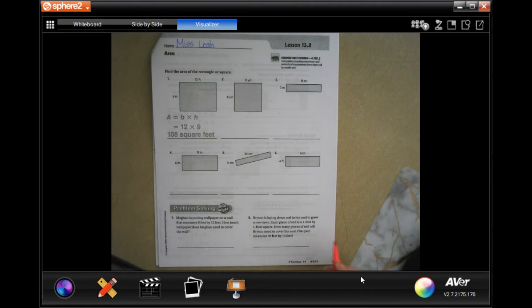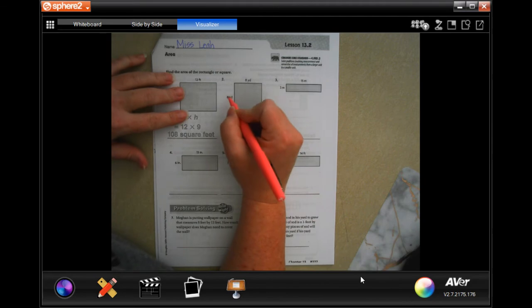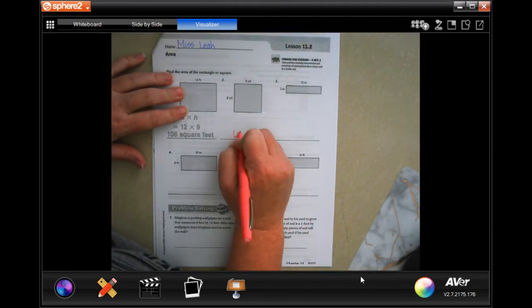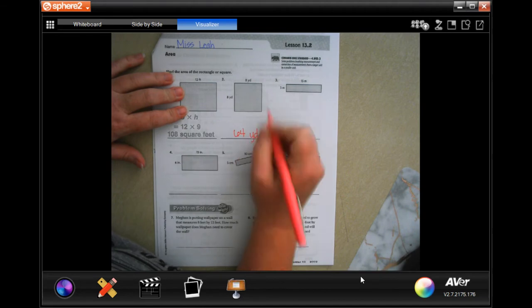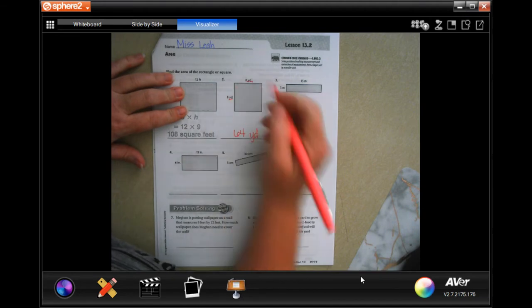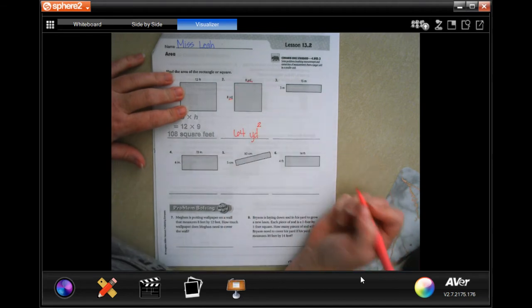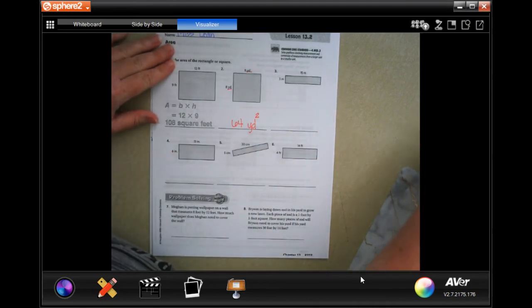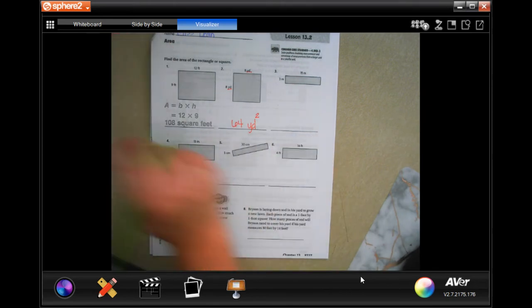So the big thing with area is area is length times height or base times height times width, whichever works, however you want to call it. When it's a square, it's easy because it's the same number. So eight times eight, 64 yards. And because we multiply yards by yards, it's yards squared. You can write square yard if you want to, that's not a problem, but you can just use the exponent of two.